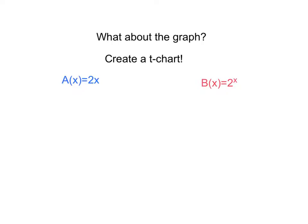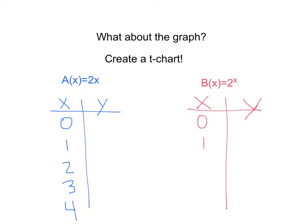For A of X is 2X, I want to look at 0, 1, 2, 3, and 4. For B of X, I'm going to look at those same values: 0, 1, 2, 3, and 4.